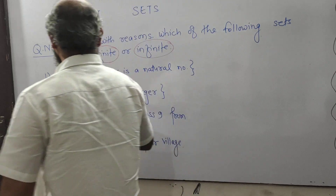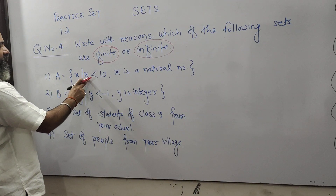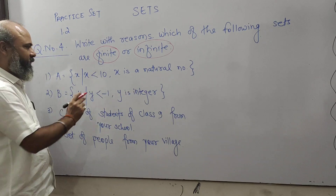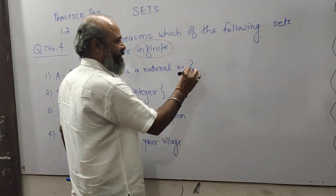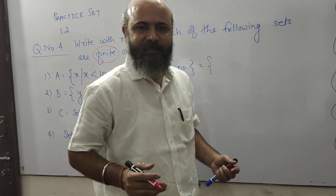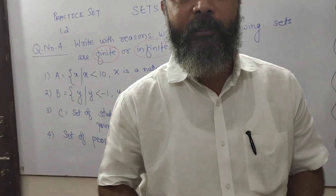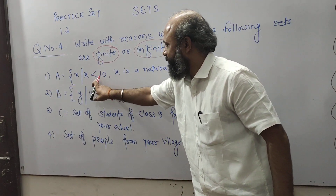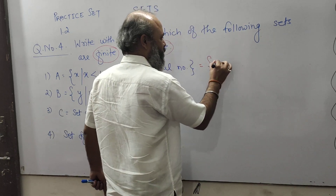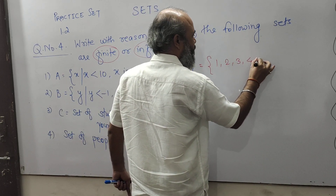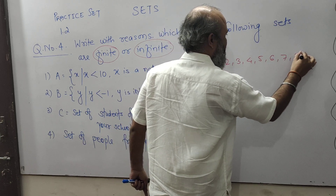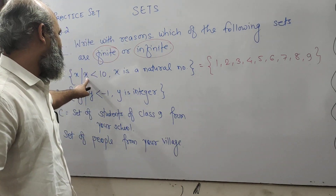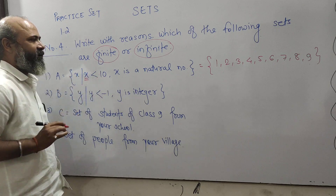The very first set: A is the set of X such that X is less than 10 and X is a natural number. Natural numbers start from 1, 2, 3, 4, 5, 6 and so on. Since X is a natural number but X is less than 10, we write 1, 2, 3, 4, 5, 6, 7, 8, 9 only.